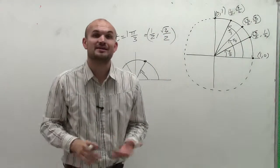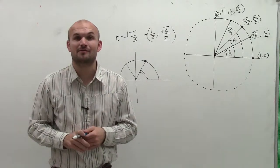So there you go. That's how you find the coordinate value for the angle t equals π over 3. Thanks.